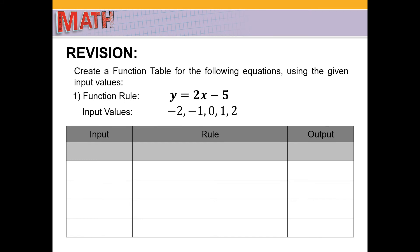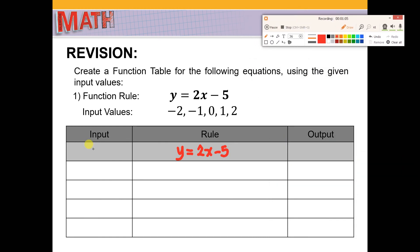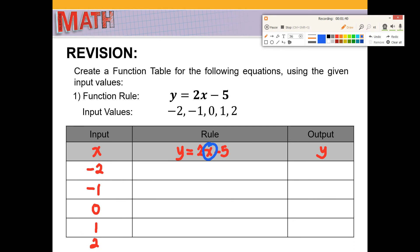The given rule is y equal to 2x minus 5. So that is our functional rule, 2x minus 5. Our input is the x values, and the output is the y values. The input values are given: negative 2, negative 1, 0, 1, and 2. Let's solve for the output using the function rule. We have to exchange the x with these numbers so we will be able to get the output.